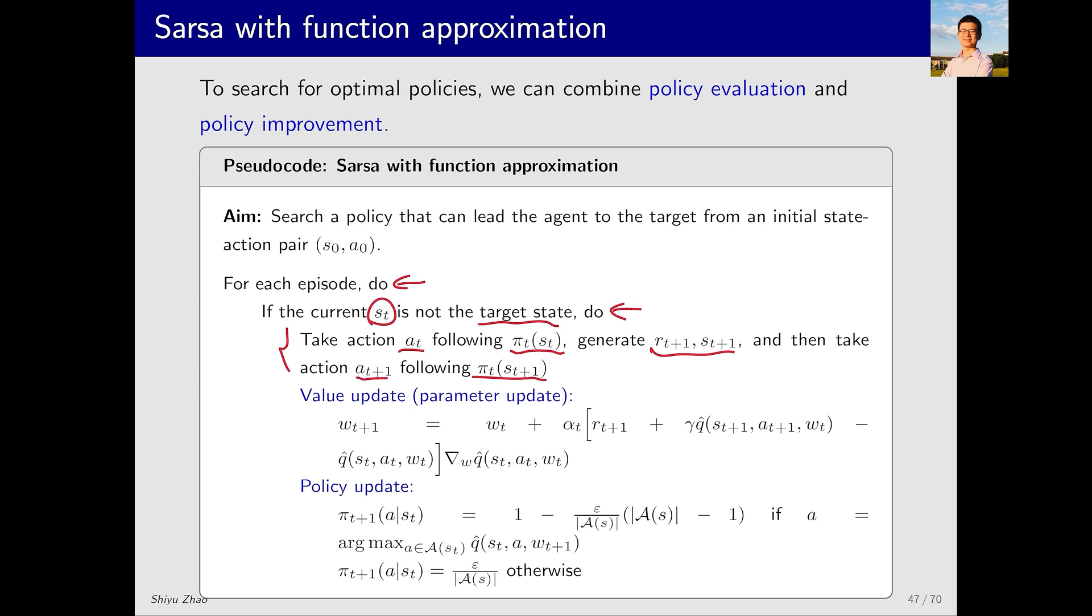Using this data we proceed with the value update. This corresponds to the algorithm we presented earlier. Note that here we're not directly updating Q hat S_t A_t to what it should equal; instead we update the parameters. This is the key difference between tabular and value function methods. Once we've done this, we can do the policy improvement step. This is the same as the previous tabular SARSA algorithm.